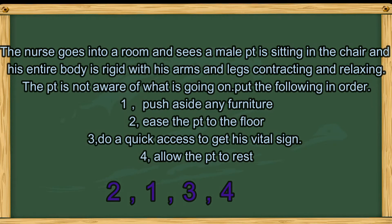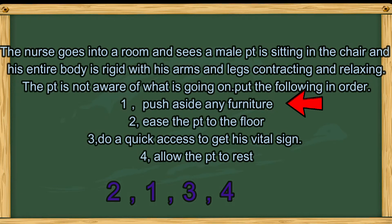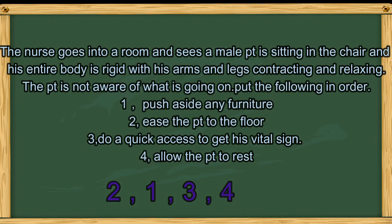The answer is 2, 1, 3, and then 4. Because the patient should not remain in the chair during a seizure, he should be brought safely to the floor so that he will have room to move his extremities. Then, number 1, the seizure patient needs to be protected from injury — moving the furniture would help ensure the patient does not hit something accidentally. Then, number 3, assess the patient. And last, after a seizure, the patient will become very tired. If you do a very long and full neuro assessment, it will make him even more tired and predispose him to another seizure.